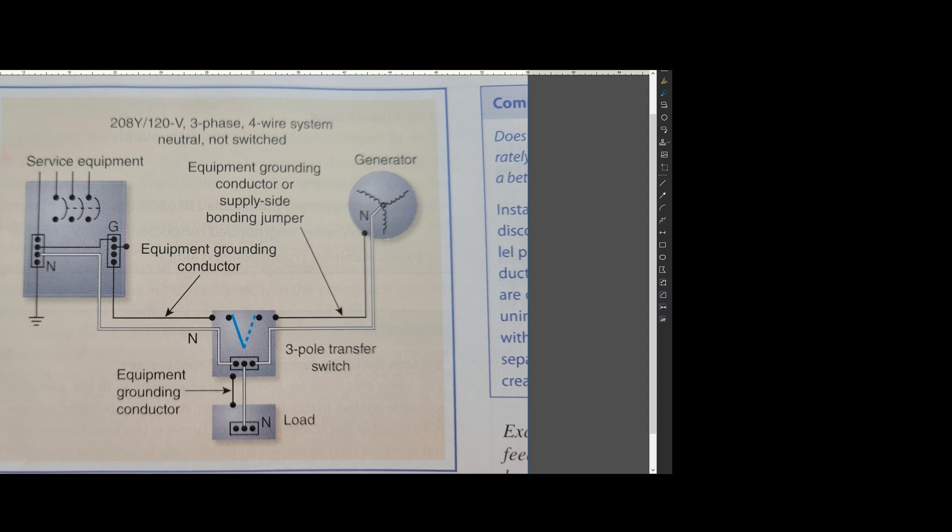In this case, this entire setup is considered as one single system. So the neutral to ground bonding jumper at your generator will need to be removed because your electrical panel already has this installed here. By code, only one bonding jumper is allowed per electrical system.